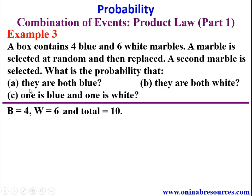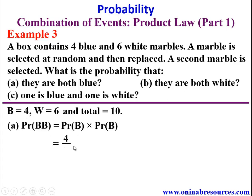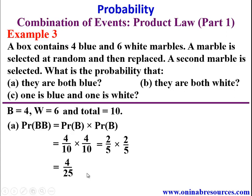For part (a), P(both blue) = P(first blue) × P(second blue) = 4/10 × 4/10. Since the marble is replaced, there are still 4 blue marbles for the second draw. This simplifies to 2/5 × 2/5 = 4/25. That is the end of solution to Example 3a.